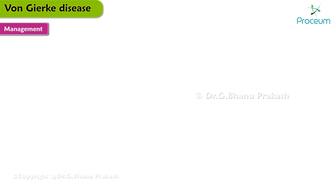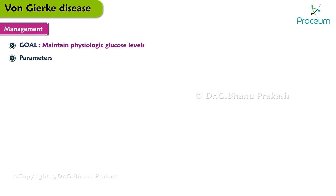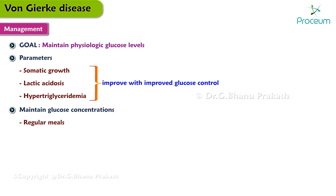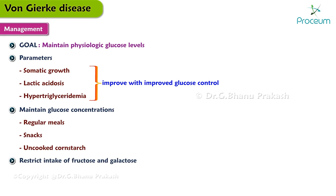The goal of treatment for Von Gierke disease, or GSD-1, is maintenance of physiologic glucose levels. Other clinical and biochemical parameters, such as somatic growth, lactic acidosis, and hypertriglyceridemia, improve in parallel with improved glucose control. Glucose concentrations are maintained with regular meals, snacks, and administration of uncooked cornstarch. There is also restricted dietary intake of fructose and galactose because these molecules cannot be converted into glucose.